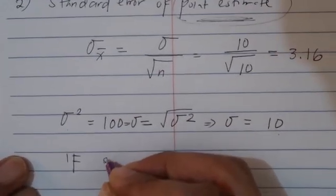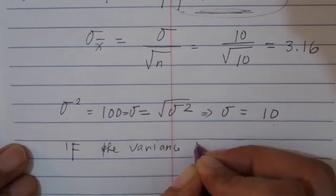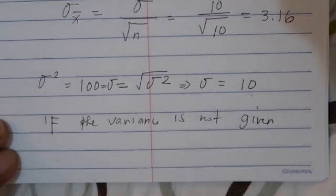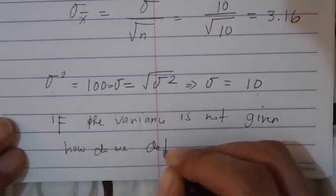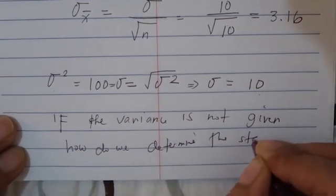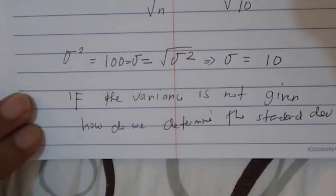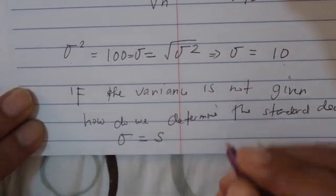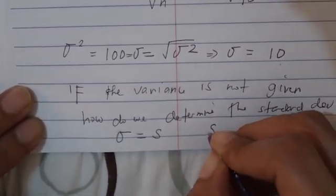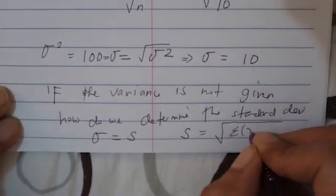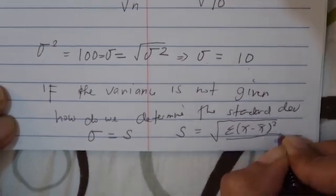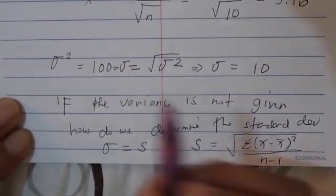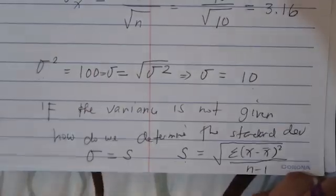If the variance is not given, to determine the standard deviation just follow this formula: the standard deviation of the sample equals the square root of the summation of (x minus the mean) squared, divided by n minus 1. You need to follow this formula to solve for the standard deviation when the variance is not given.